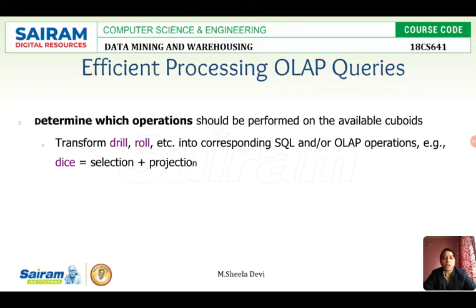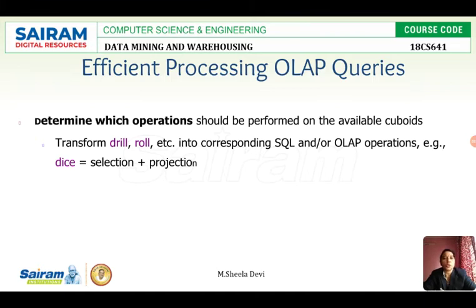We have to pre-compute cuboids for the few dimensions with respect to history — whichever dimension is asked frequently, we can pre-compute those cuboids. Now we have to determine which operation should be performed. The operations available are drill down and roll up operations, slice and dice operations, and pivot operation. These are the operations that can be performed on the cuboids to efficiently process an OLAP query.